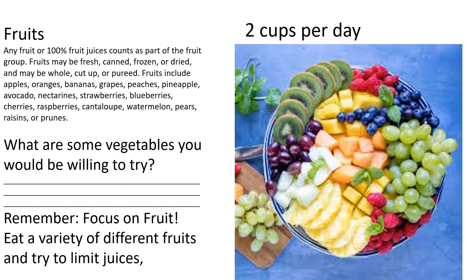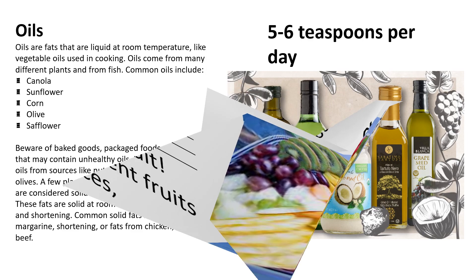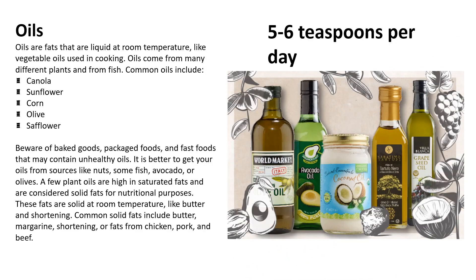Next we have oils. Oils are fats that are liquid at room temperature, like vegetable oils used in cooking. Oils come from many different plants and from fish. Common oils include canola, sunflower, corn, olive, or safflower. Beware of baked goods, packaged foods, and fast foods that may contain unhealthy oils. It is better to get your oils from sources like nuts, some fish, avocado, or olives.